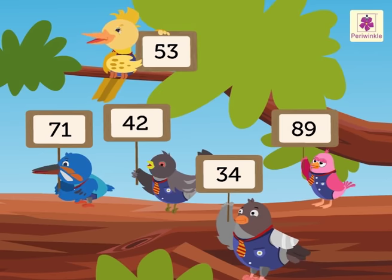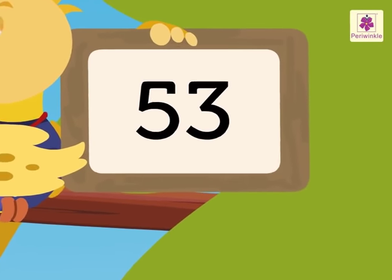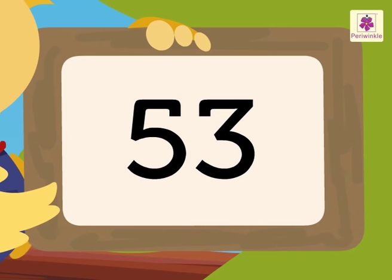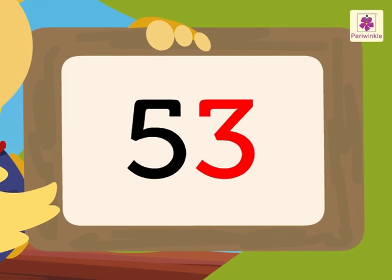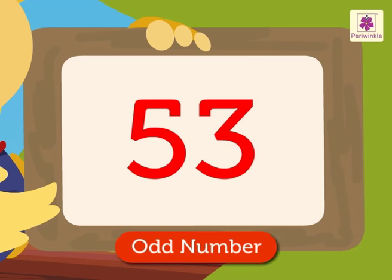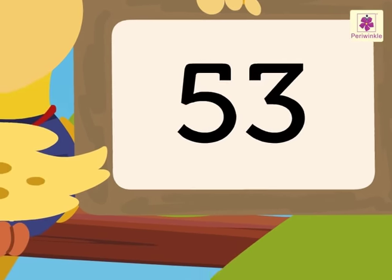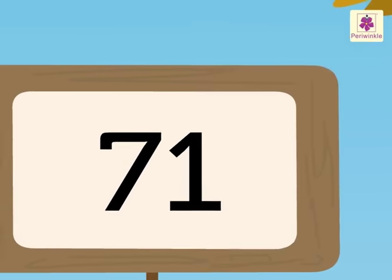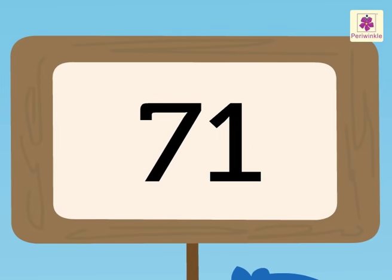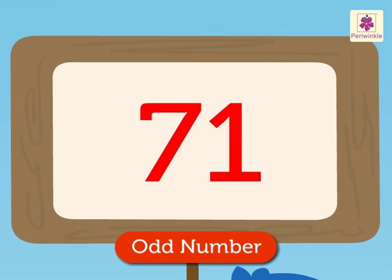First, let us look at the number 53. Here, the number 3 is in the ones place, so 53 is an odd number. Next is the number 71. Here, the number 1 is in the ones place, so 71 is an odd number.